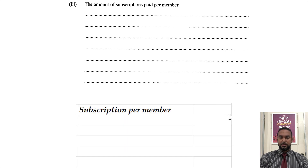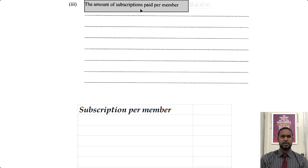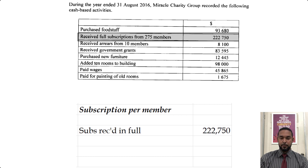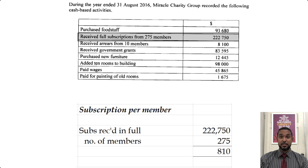This part asks for the amount of subscriptions paid per member. In the receipts and payments information, we received full subscriptions from 275 members totalling $222,750. So we divide $222,750 by 275 members, and that gives us $810 per member.